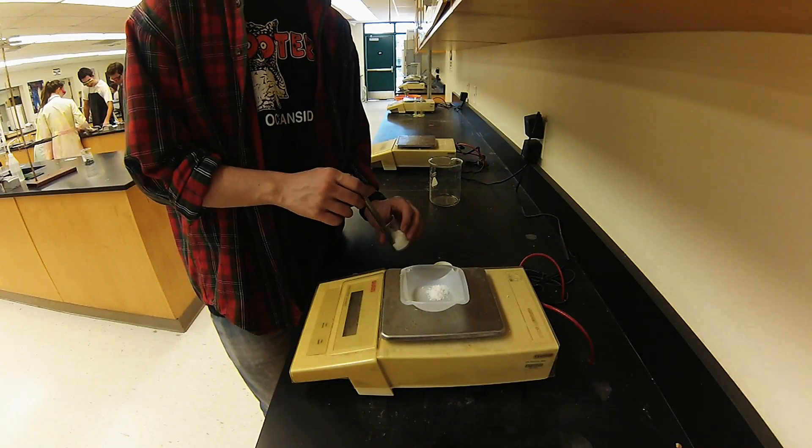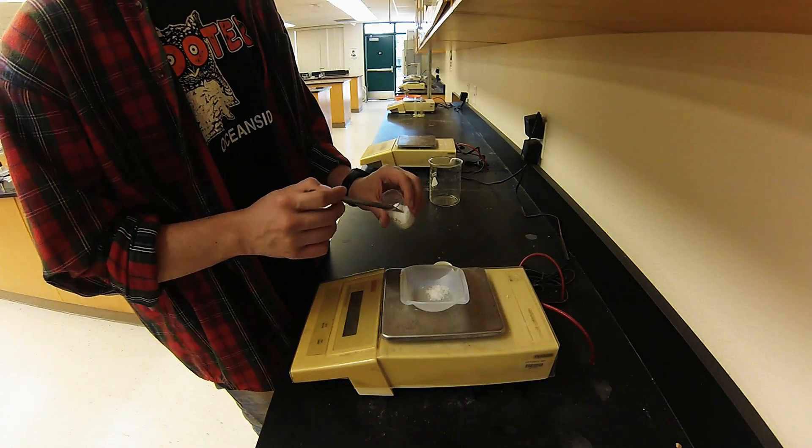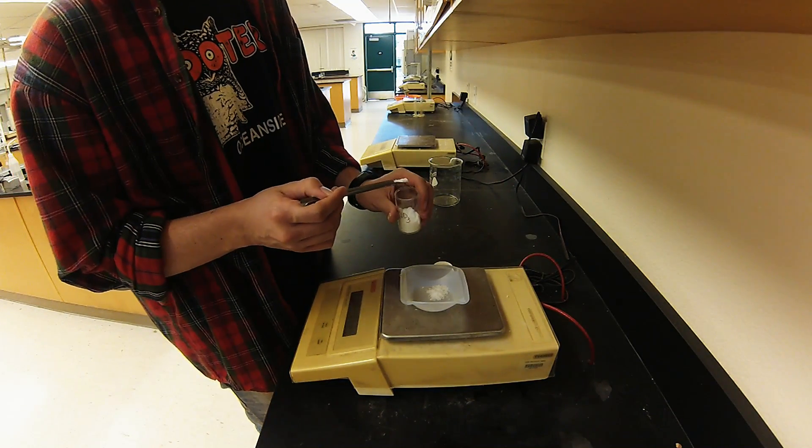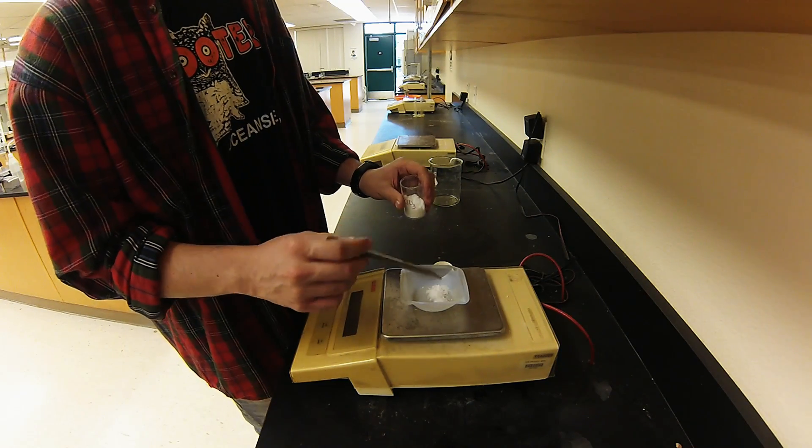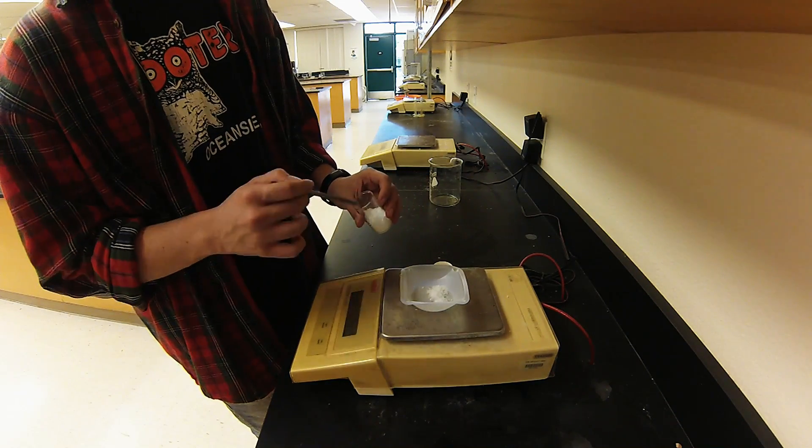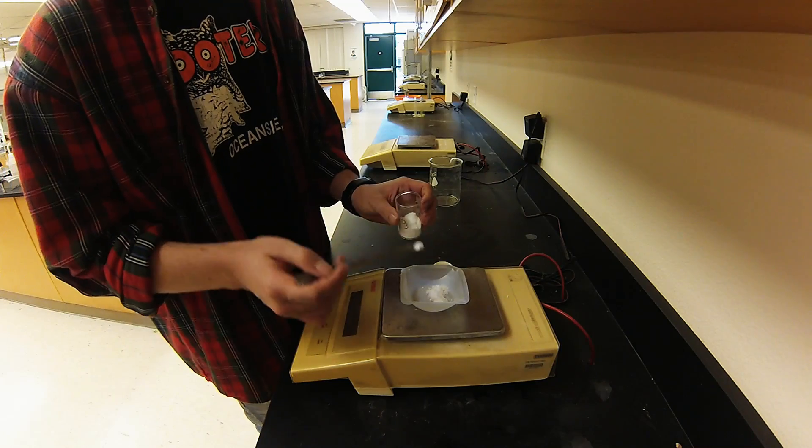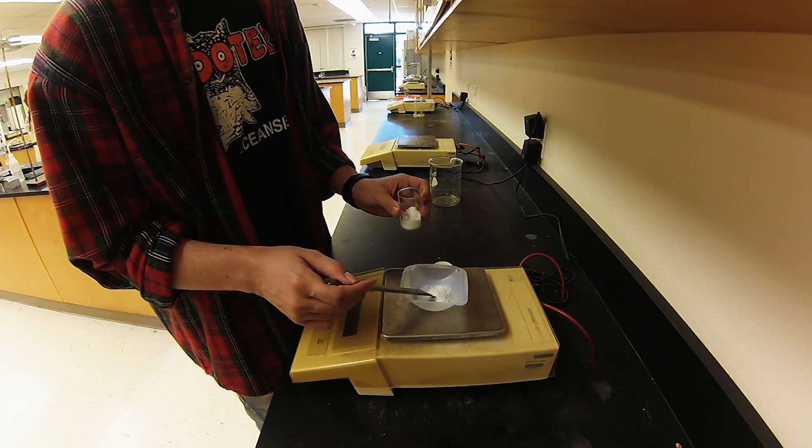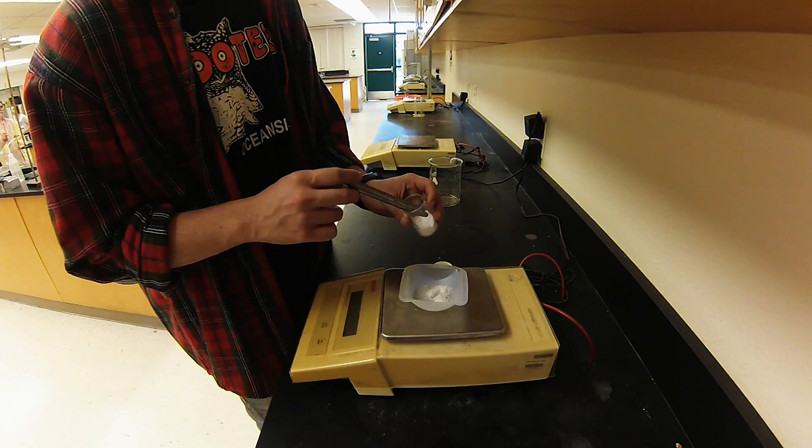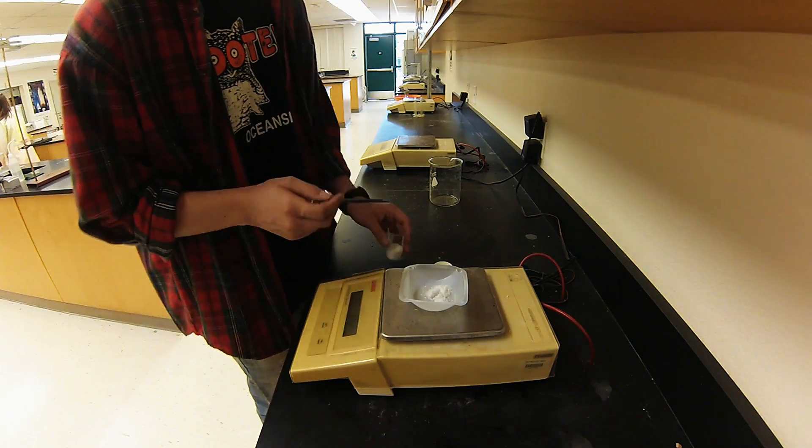First we're going to weigh out about two grams of the potassium chlorate into our scale, and be careful not to let the potassium chlorate touch the paper or your skin because it's quite reactive.